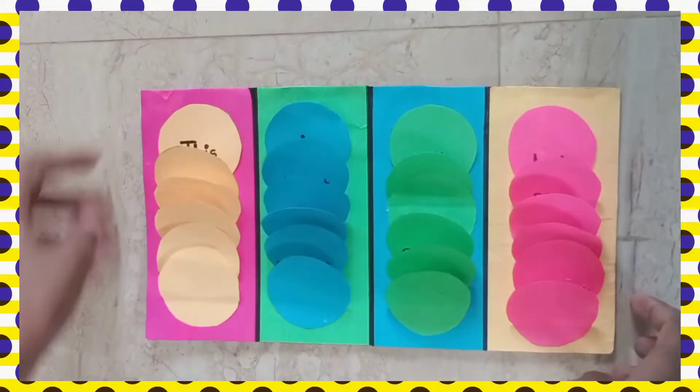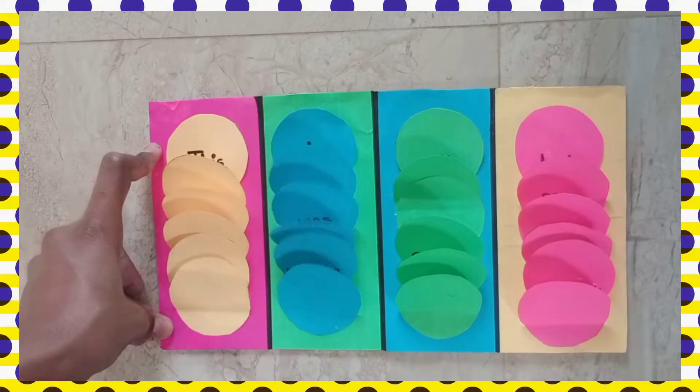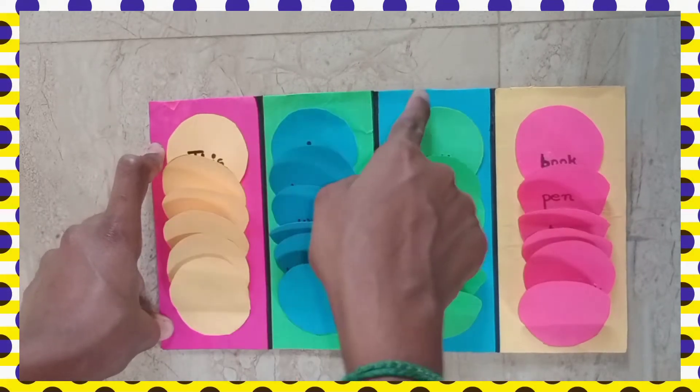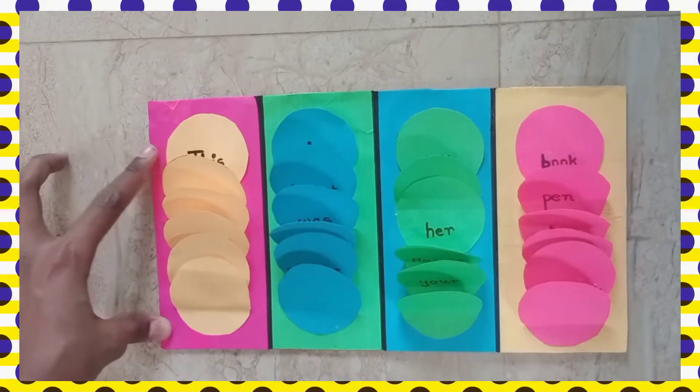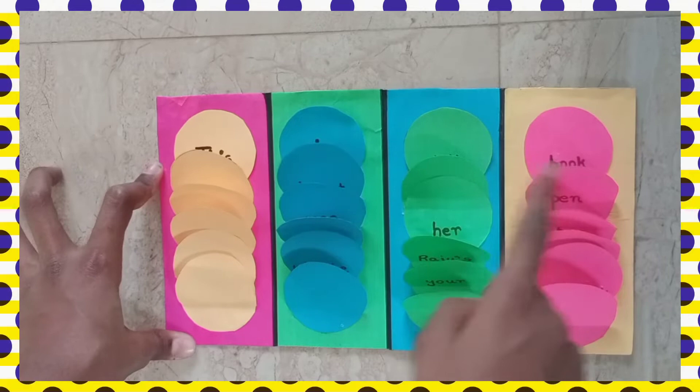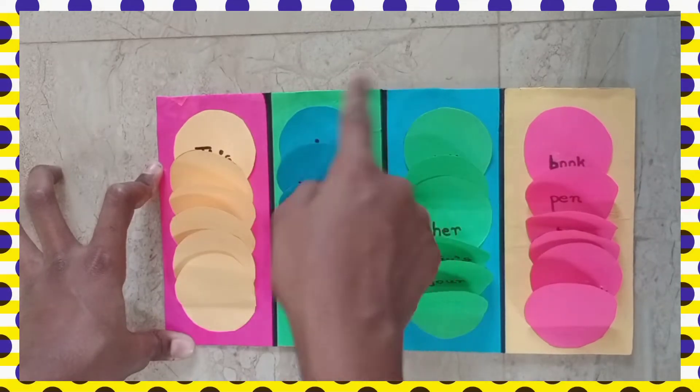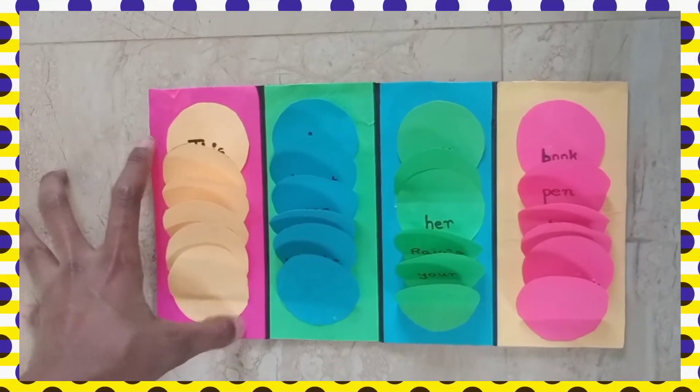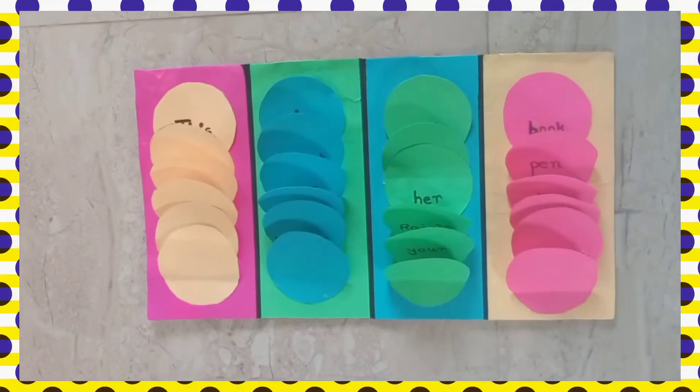Then I divided the four columns using a black marker by drawing lines. Upon the A4 sheet, I have pasted four attractive color papers. Then I made 24 color rounds, which means six in each color. I pasted them alternating with the color sheets so that it will look beautiful.